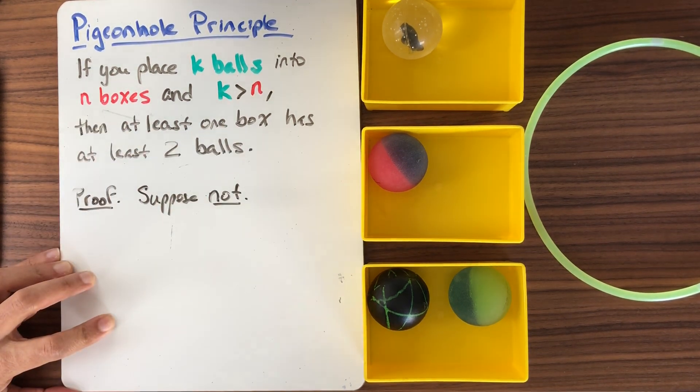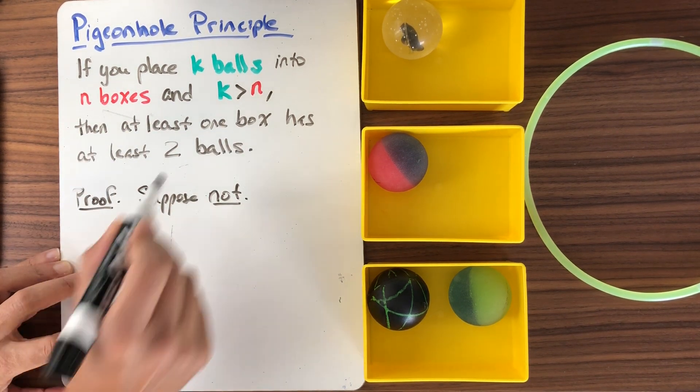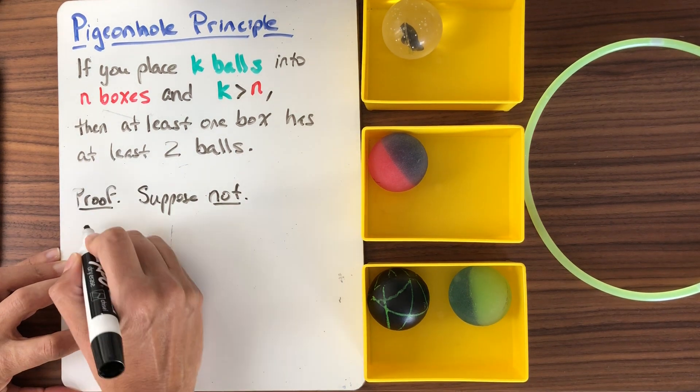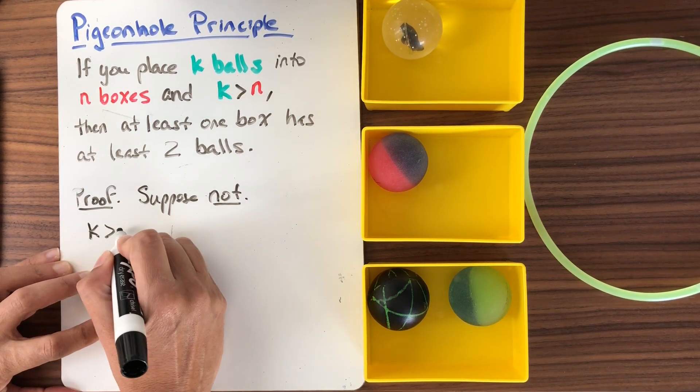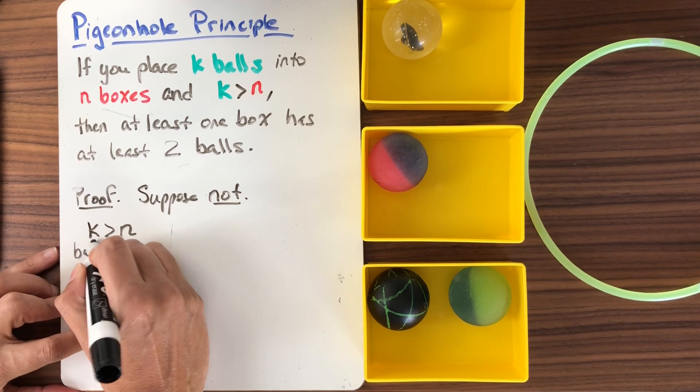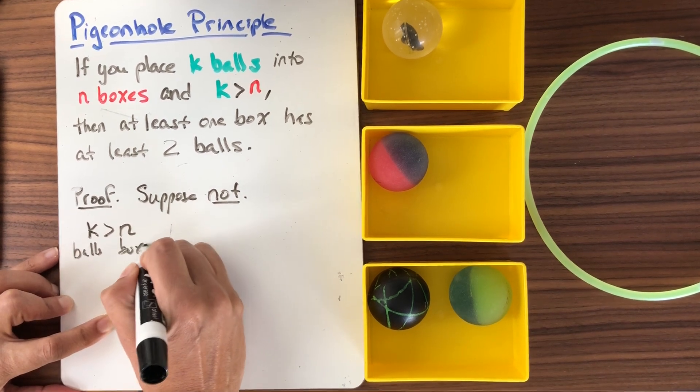So I keep the hypotheses and I change my conclusion to be the opposite of what's written. So here I get k greater than n, and this is going to be balls. And this is going to be boxes n.